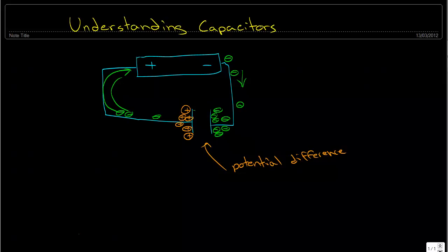Eventually we end up with a very strong potential difference. If we keep trying to put electrons on the plate, the electrons that are already there will repel incoming electrons — they won't let another electron through. So the terminal tries to shoot an electron through, but because so many are already stacked up, it gets rejected and pulled back. We end up with an equilibrium over time, and this is what happens when the capacitor gets fully charged.